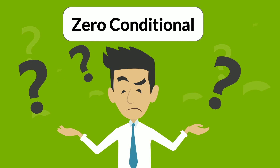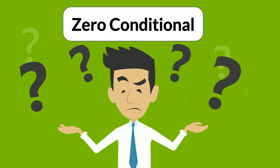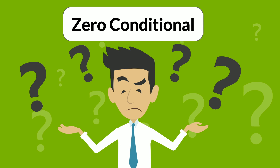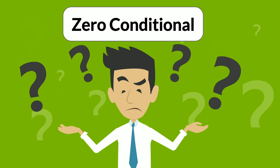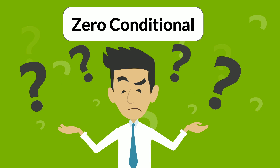Zero conditional. What is the zero conditional? We usually use the zero conditional to talk about things which are always true, or things which always happen as a result of something else. We're not talking about a specific event here, but rather something which is generally true.